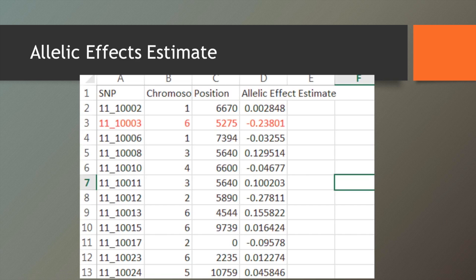So here's the allelic effect estimates. On that last page you might have saw this marker came up significant, and this just gives you an estimate of the effect. And in our case, the minor allele would reduce grain protein content by about 0.23%. And so again, GAPIT generates this table for you as well.